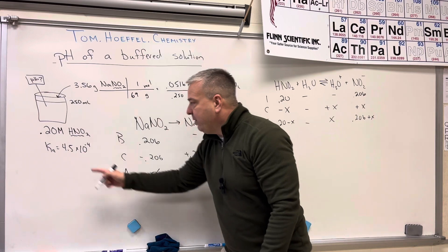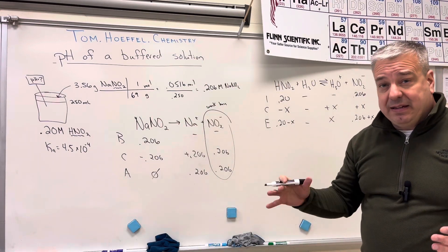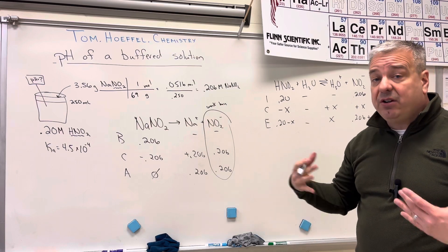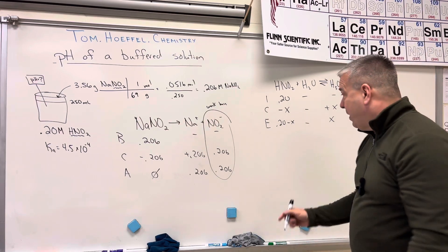Now, the Ka value is 4.5 times 10 to the negative 4. And when it's times 10 to the negative 4, I feel very good about approximating. And we do this method to avoid using the quadratic equation.